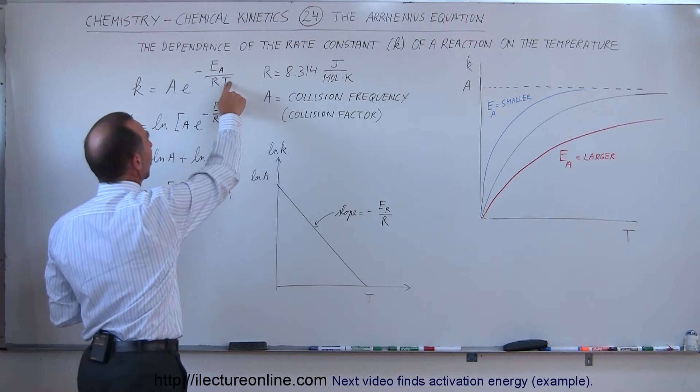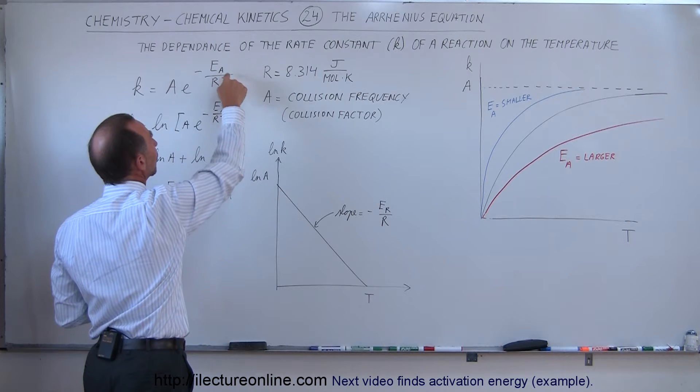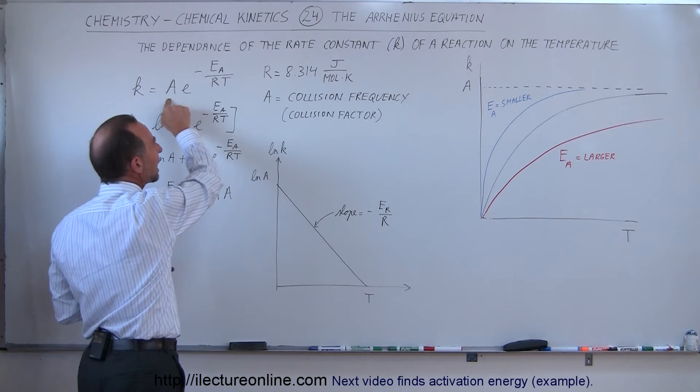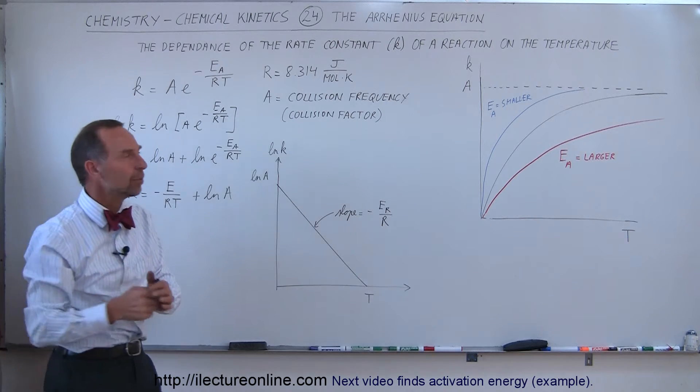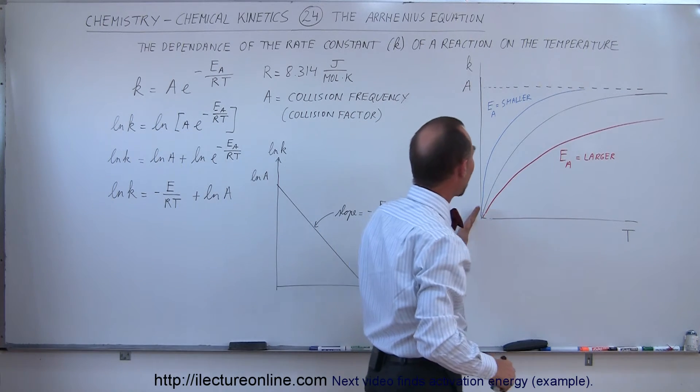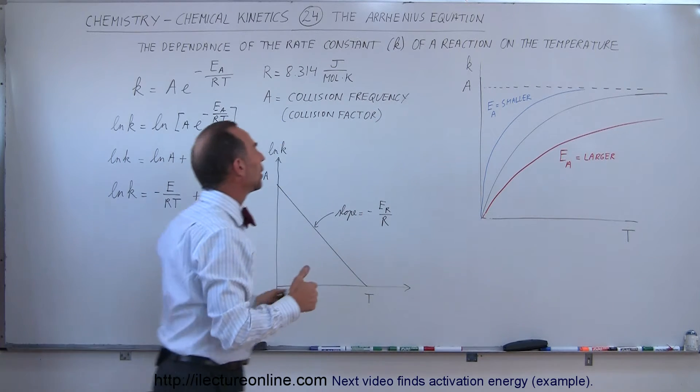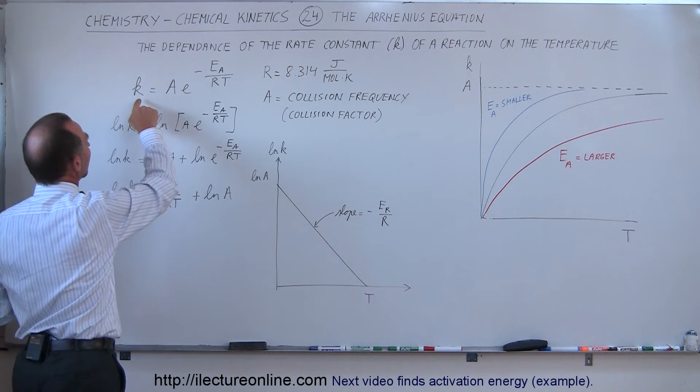If the temperature becomes large, when T goes to infinity, anything over infinity is zero, e to the zero is one, so you will approach A. A is the collision frequency. So that means that at very high temperatures, the collision frequency will be almost equal to the rate constant.